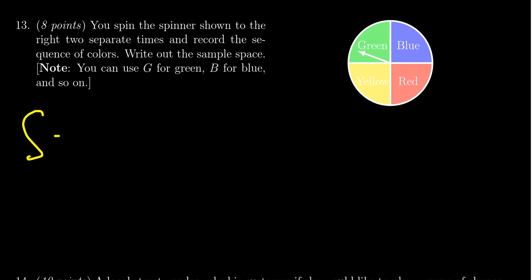So the sample space, if you spin, you're going to get two colors. You could spin it once and get a green. You could spin it and get a green again, or you could also spin it and get green and a blue, a green and a red, a green and a yellow. So that would be all the cases if you get green first.